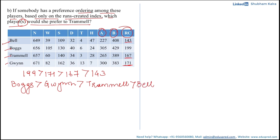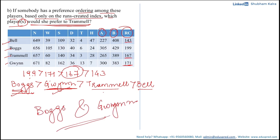So the ranking is: Boggs has the highest Runs Created, followed by Gwynn, then Trammell, then Bell. The question asks which players would be preferred to Trammell, meaning those with a higher RC than Trammell's 167. Boggs has 199 and Gwynn has 171, both higher than Trammell's 167. Therefore, if a person ranks players based on Runs Created index, she would prefer Boggs and Gwynn to Trammell.